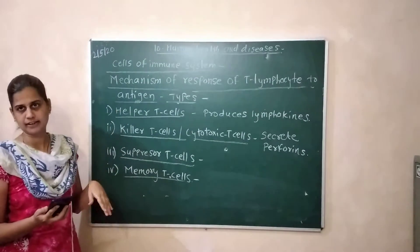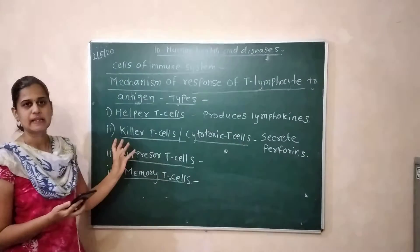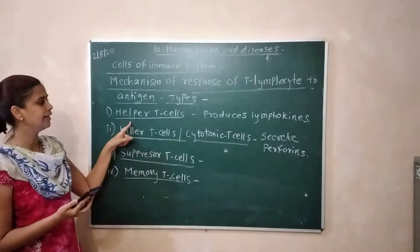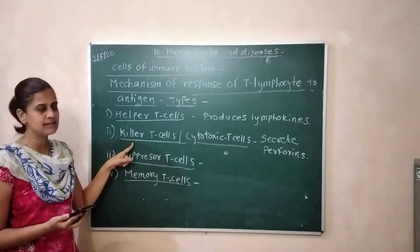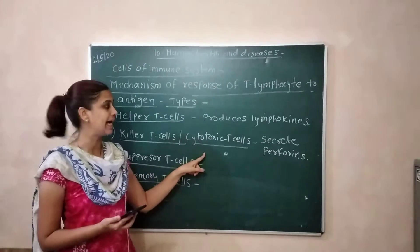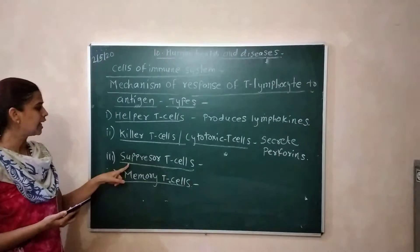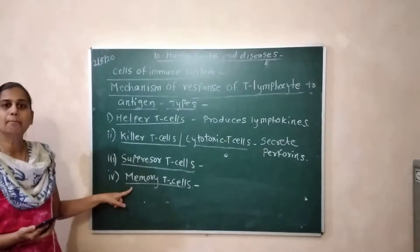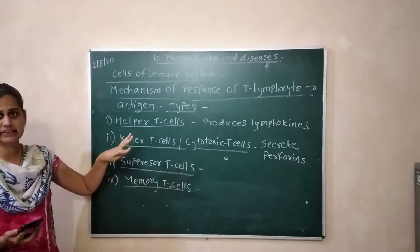What are the types of T-lymphocytes? T-cells are divided into four types: helper T-cells, killer T-cells (also called cytotoxic T-cells), suppressor T-cells, and memory T-cells.